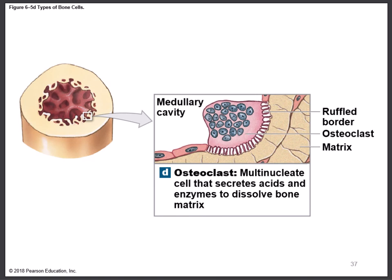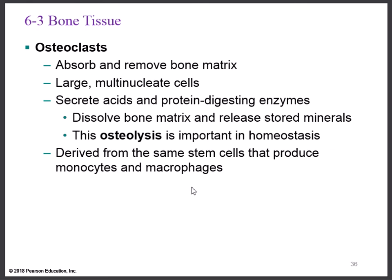Looking at Martini's diagram, the osteoclast is located on the endosteum. It's a big cell with multiple nuclei and a ruffled border where acids are released, disintegrating the bone matrix. One reason we need osteoclasts is when blood calcium levels are low — bone can be broken down to release calcium into the blood, acting as a calcium bank. Osteoclasts are also important in bone remodeling.